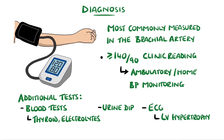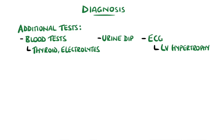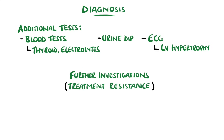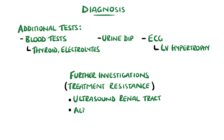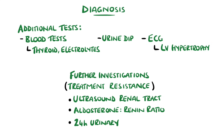If secondary hypertension is suspected — for example in patients who despite multiple medications are still hypertensive — then further investigations like an ultrasound of the kidney, an aldosterone to renin ratio, and 24-hour urinary metanephrines are done.